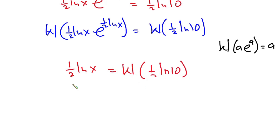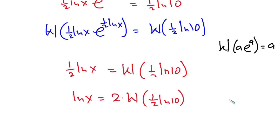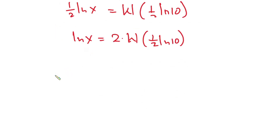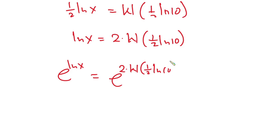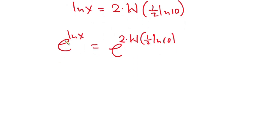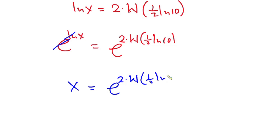Multiplying both sides by 2, we have natural log of x equal to 2 times W of one half natural log of 10. Since we're looking for x, let's introduce e on both sides of the equation. We have e to the power natural log of x equal to e to the power two times W of one half natural log of 10. The e and natural log cancel, so x equals e to the power two times W of one half natural log of 10.